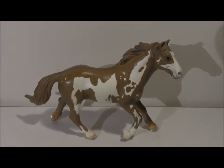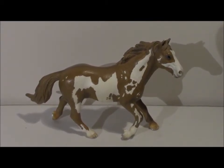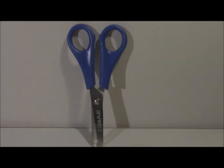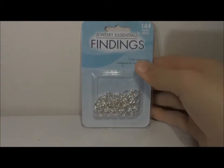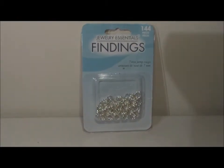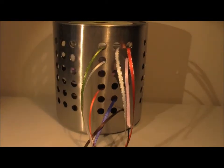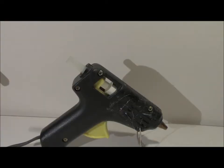You will need a horse - I am using Blue Eagle, my paint stallion - some tweezers, scissors, white felt, red felt, jump rings (you will need 7mm jump rings), and you will also need some ribbon and a hot glue gun.